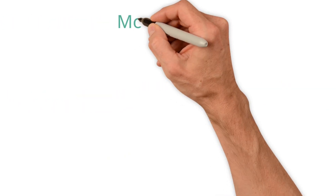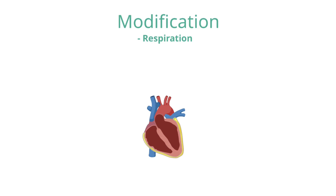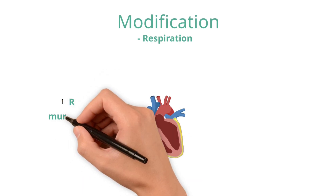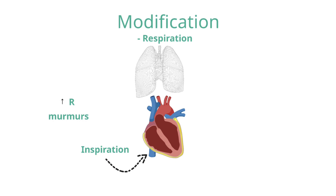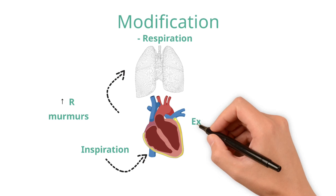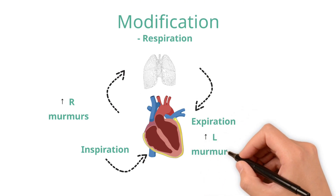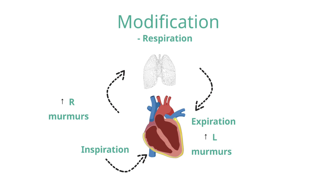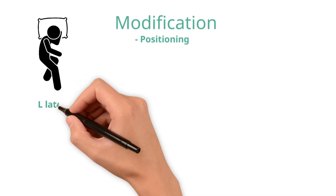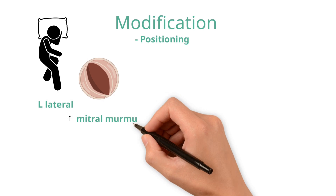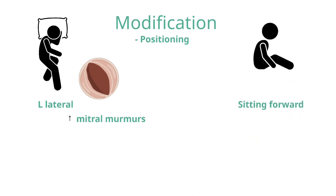Murmur intensity can be modified by various manoeuvres, of which inspiration, expiration, and positioning are the most commonly performed. Inspiration with breath holding usually exacerbates murmurs from the right side of the heart, as it sucks more blood from the vena cavae into the right atrium and ventricle, increasing flow and turbulence across the right-sided valves; it makes left-sided murmurs quieter. Expiration with breath holding does the reverse. Left lateral positioning increases the loudness of mitral murmurs as the mitral valve is brought closer to the left lateral chest wall. Sitting forward increases the loudness of aortic murmurs as blood through the aortic valve is directed more towards the anterior chest wall.